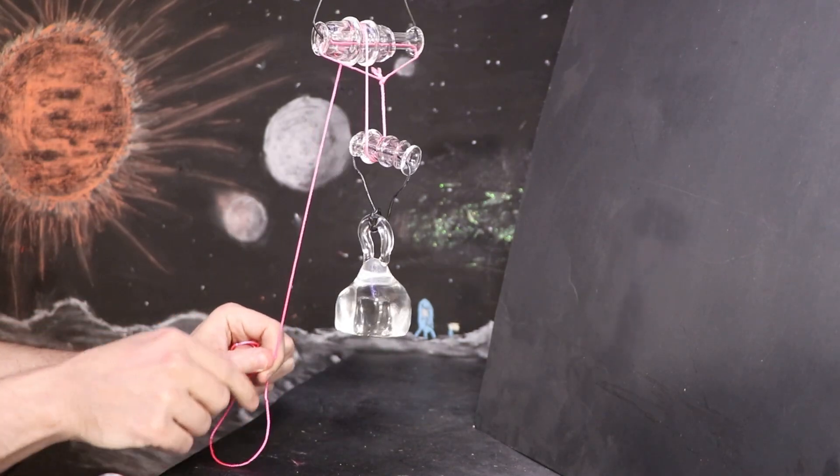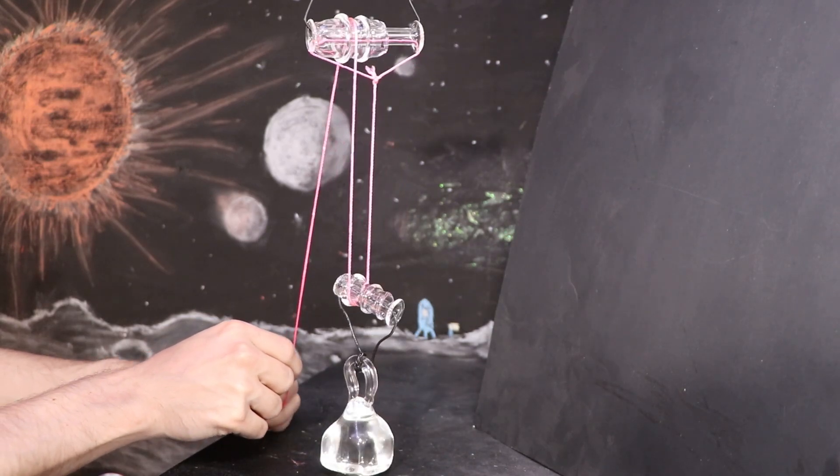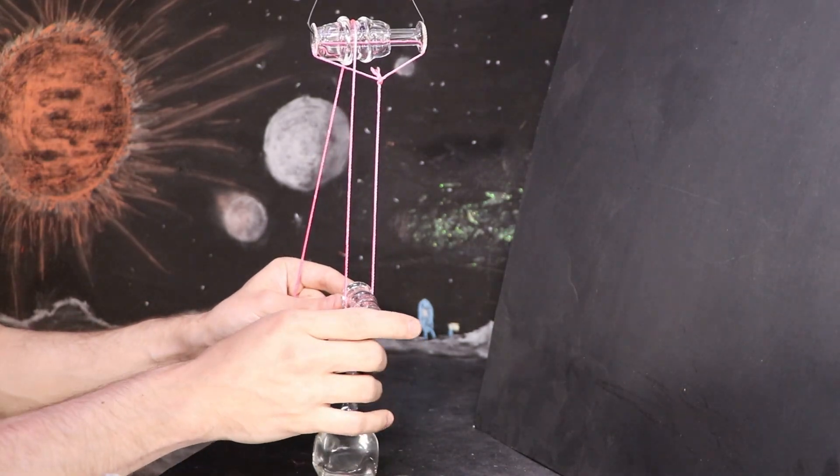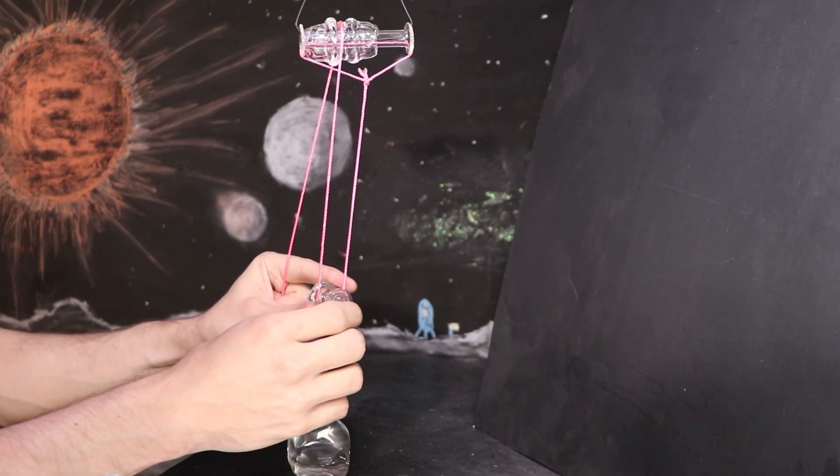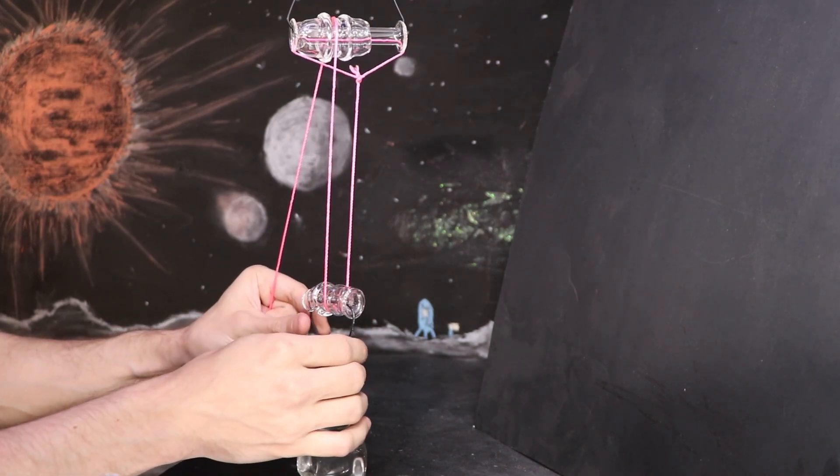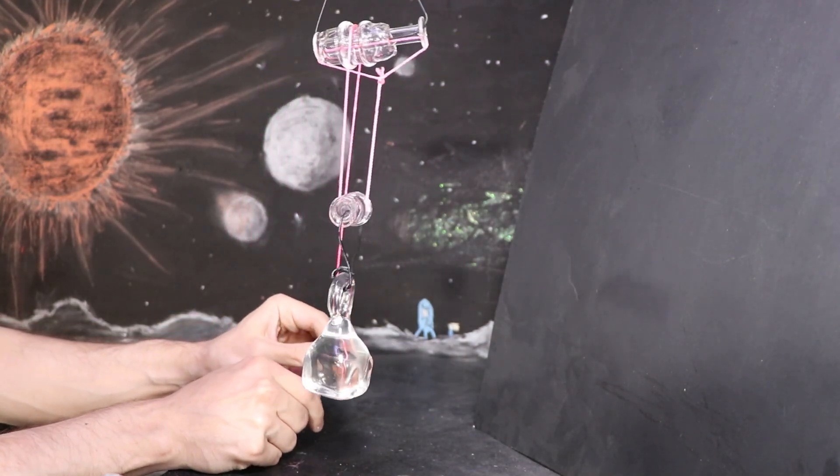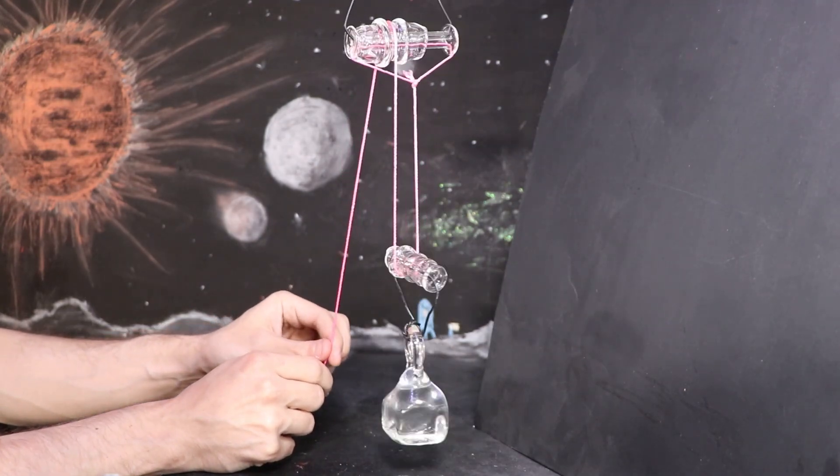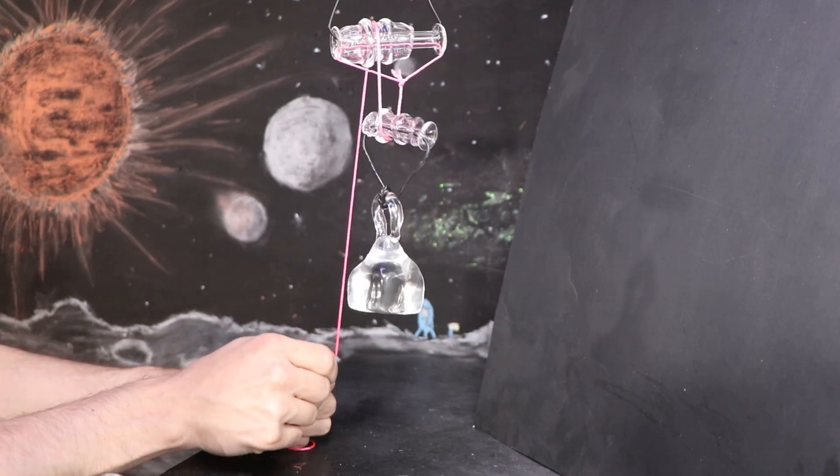But now I'll add another pulley and gain some mechanical advantage. And the difference here is that the rope doesn't just go down and connect to the object, but wraps around and comes back up. And so we have twice as much rope we're working with. I'll have to pull the rope twice as far to move the object the same distance, but it'll be twice as easy to pull.